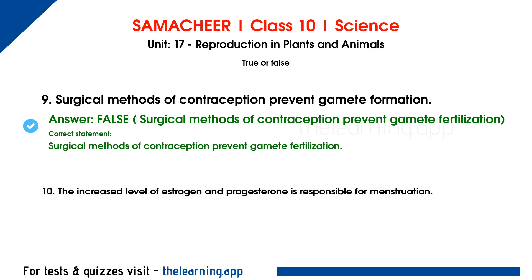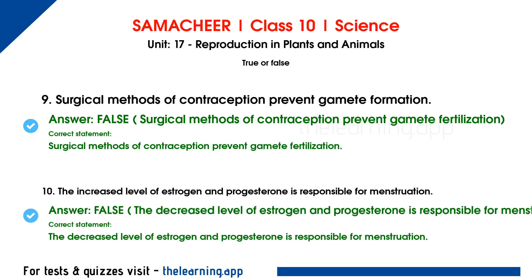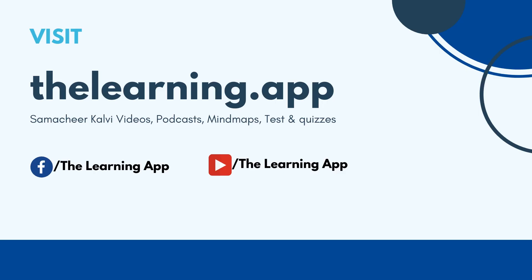Tenth question: the increased level of estrogen and progesterone is responsible for menstruation. This is false. The correct statement is: the decreased level of estrogen and progesterone is responsible for menstruation. Like, share, comment, and subscribe.